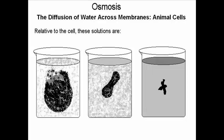The diffusion of water across a membrane is of course called osmosis. We'll look at animal cells to start with. Here in these beakers are some giant animal cells, shown in sort of fuzzy black. On the left the cell is swelling and then bursting. In the middle the cell is holding its own. And on the right the cell is shrinking. The question is, relative to the cell, what are these solutions?